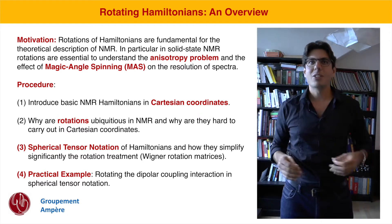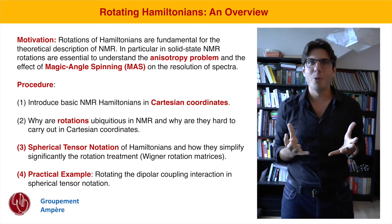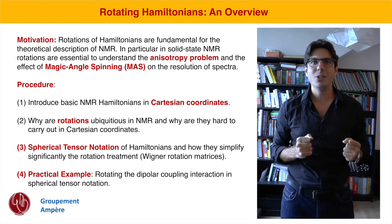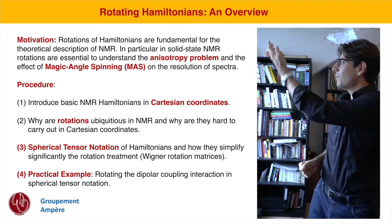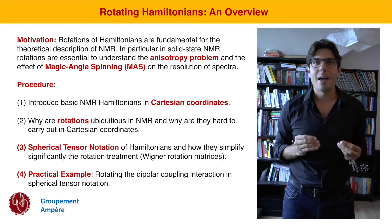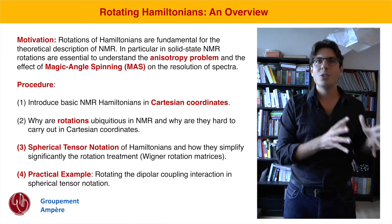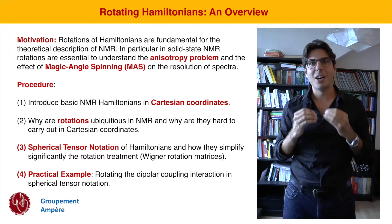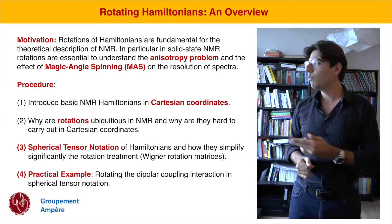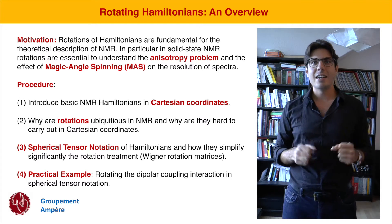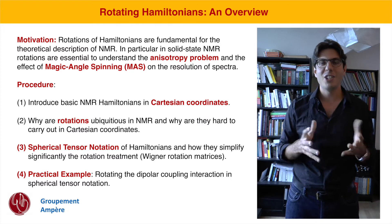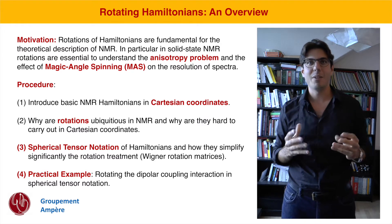It's an extended topic so it's also going to be a bit of a more extended encyclopedia entry than we're normally used to. First of all we talk about Hamiltonians in general and we want to introduce some of the basic NMR Hamiltonians in Cartesian coordinates. Then we will move on to understanding why rotations are important and ubiquitous in NMR and in the theoretical treatment of NMR.